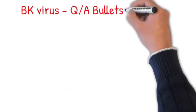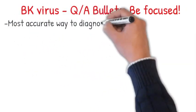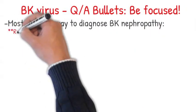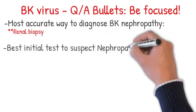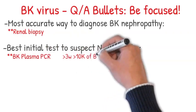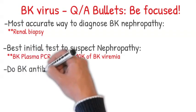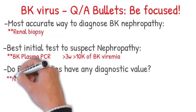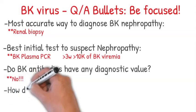Let's move to Q&A bullets. What's the most accurate way to diagnose BK nephropathy? Renal biopsy. What's the initial test to suspect BK nephropathy? BK plasma PCR — persistent more than 3 weeks with more than 10,000 copies is highly suggestive of BK nephropathy. Do BK antibodies have any diagnostic value? Of course not, because we encountered the virus during childhood, so anybody might have it — it's not diagnostic.